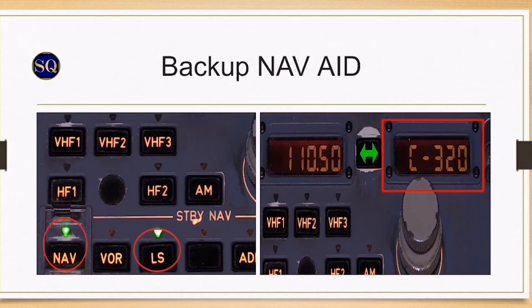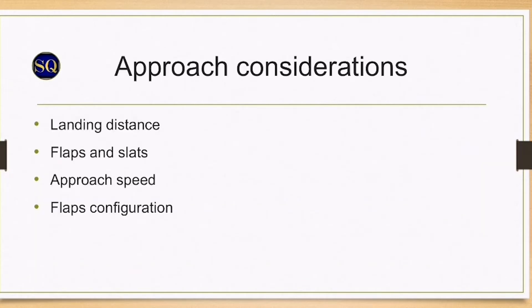Approach considerations: the landing distance is almost double that of a normal landing and this should be taken into account when choosing a diversion airfield.